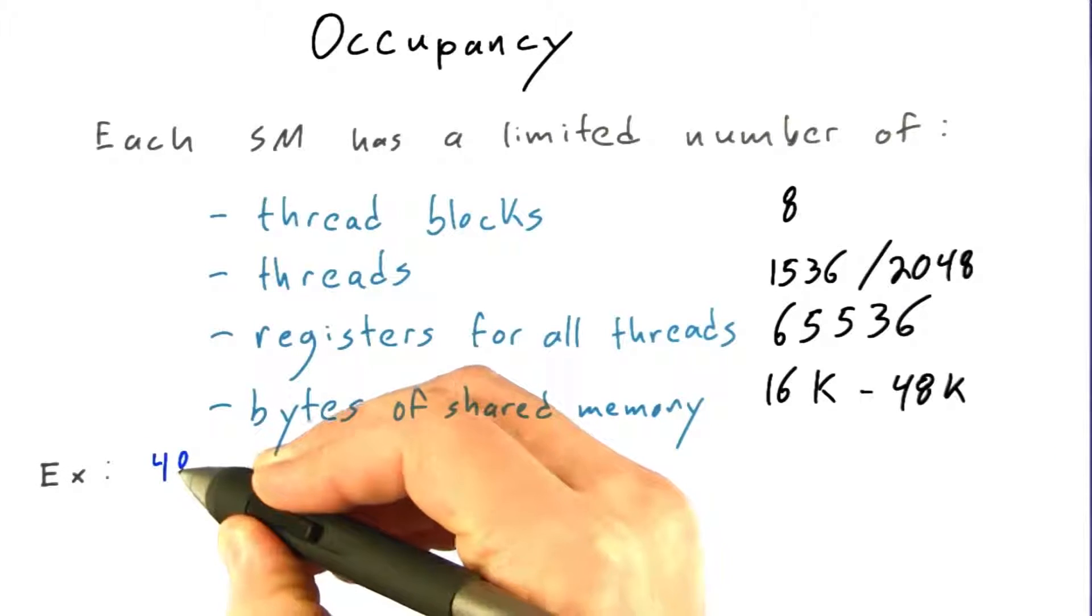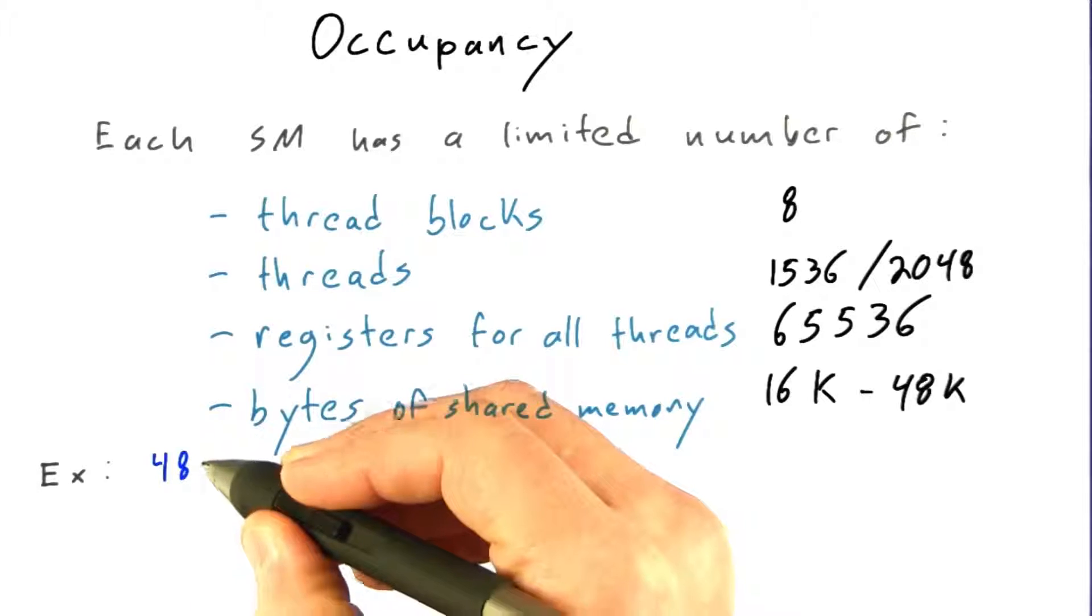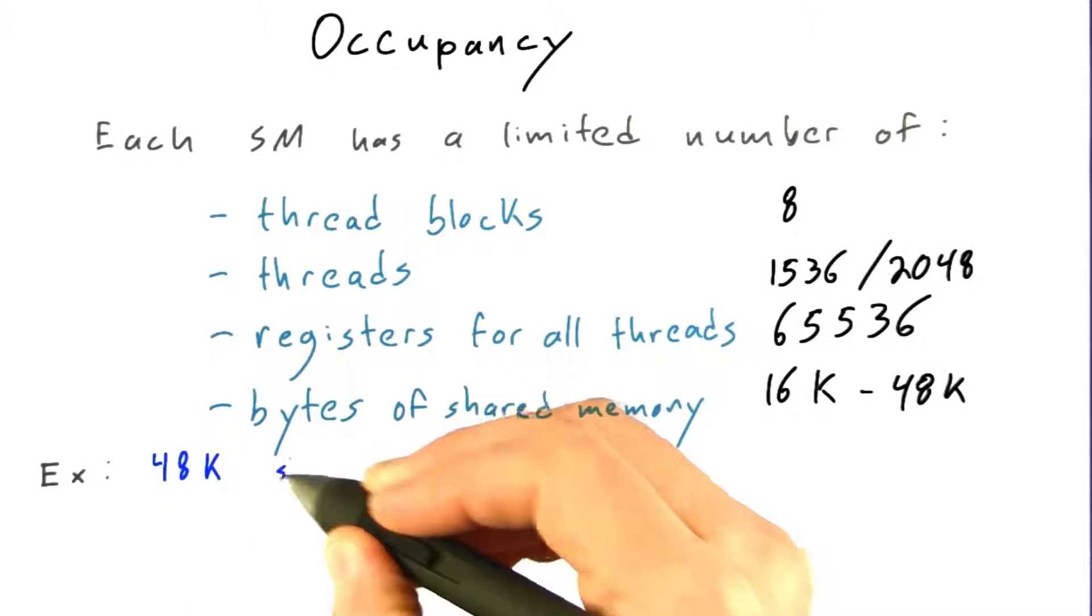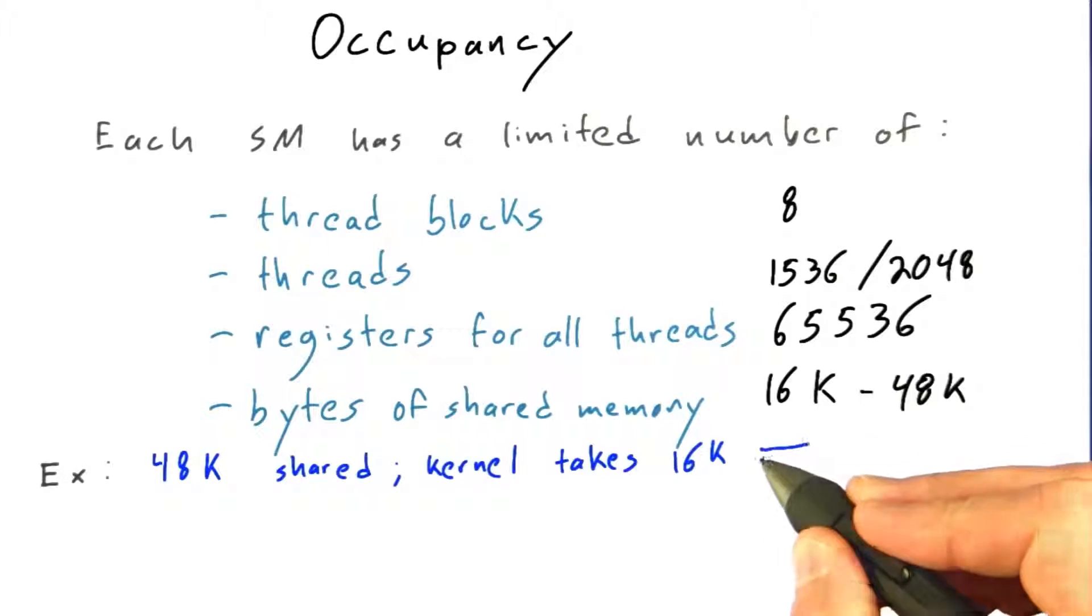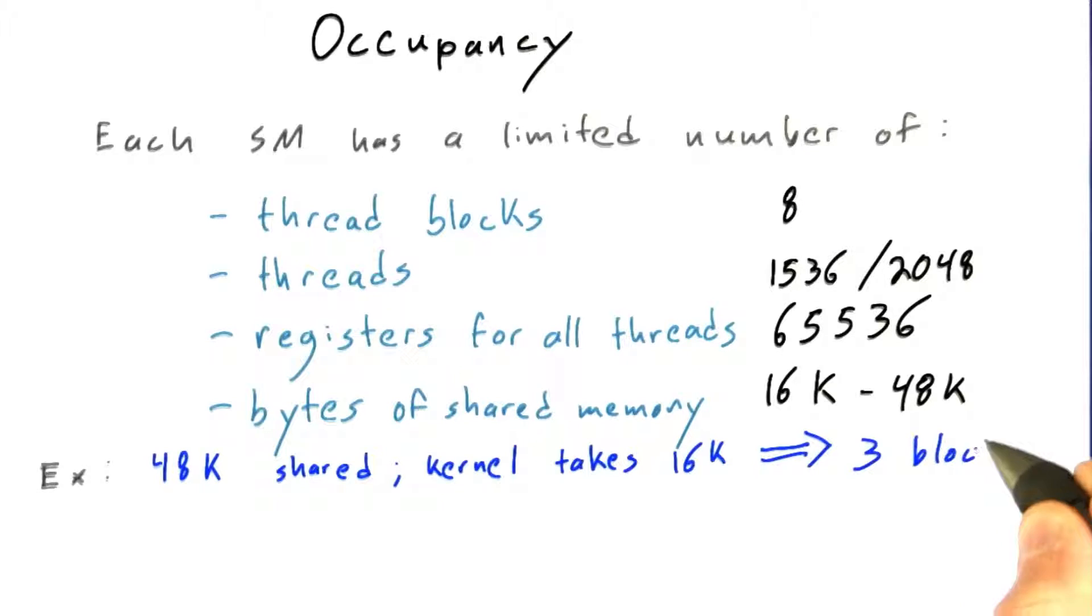So, for example, if I'm running on a GPU with 48K of shared memory, and a single thread block in my kernel requires 16K of shared memory, then I can run at most three blocks on that SM.